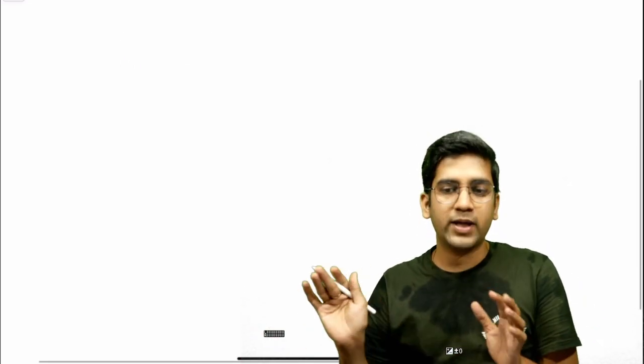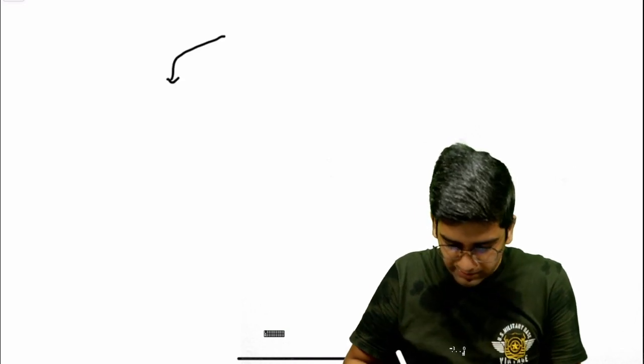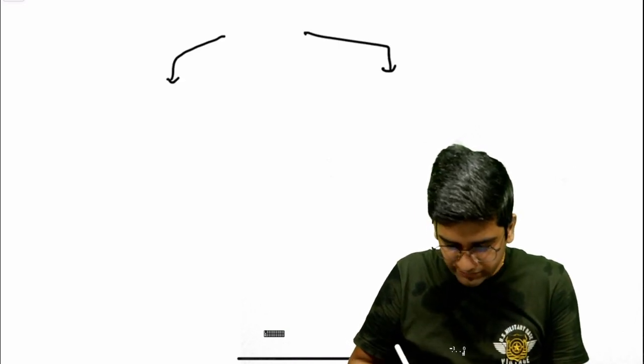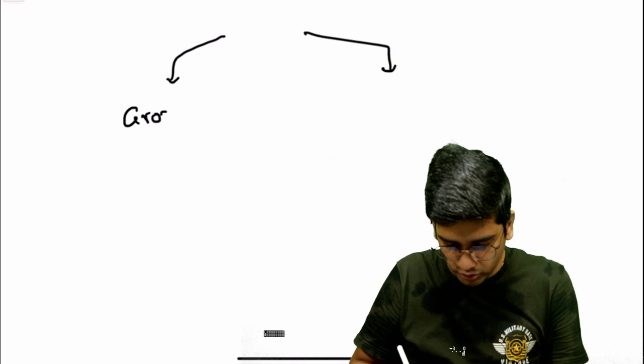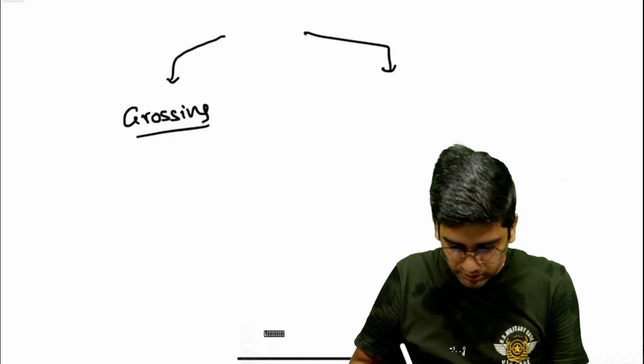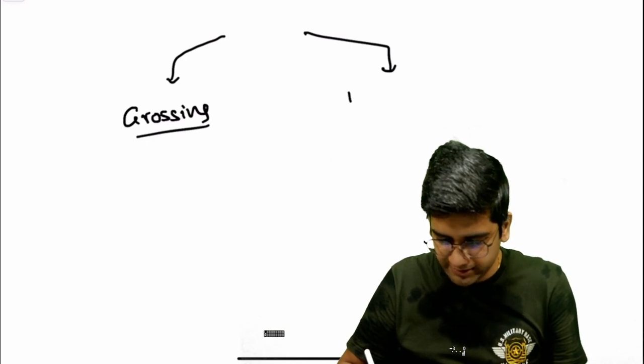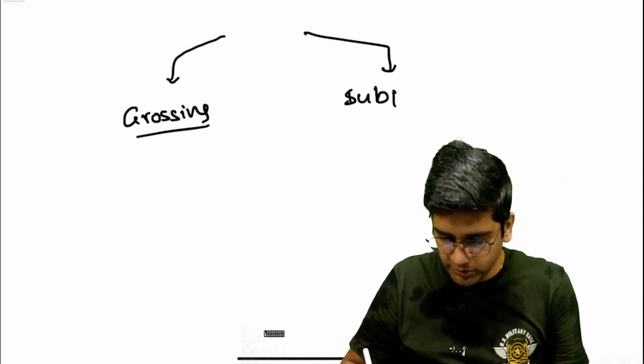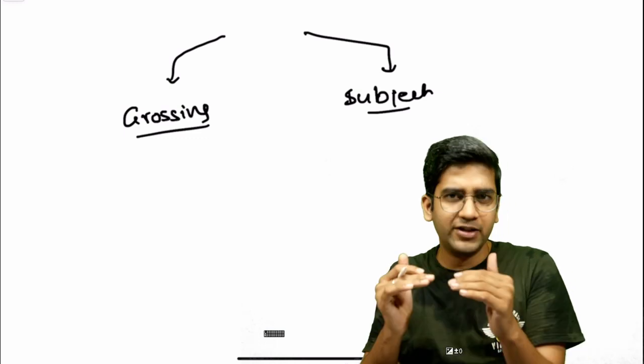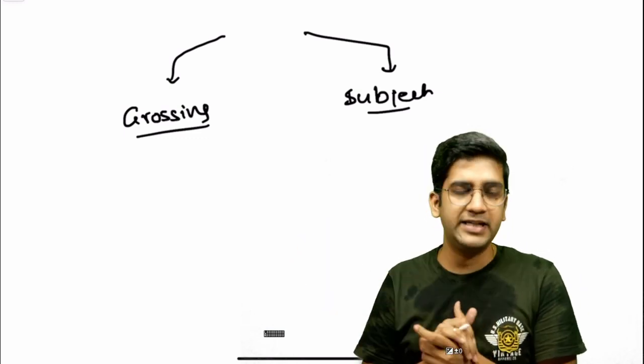So primarily what I'm going to do in the app is, I'm going to segregate the app into two primary things. One will be mainly dedicated for grossing. I'll tell you what will be there in the grossing module and the next will be the entire subject. The entire subject will be having multiple submodules into that. I'll be discussing about them as well.